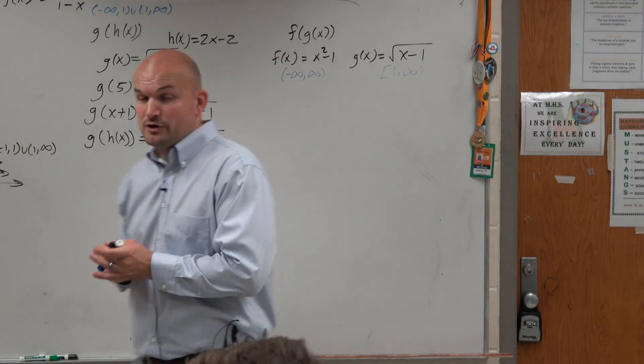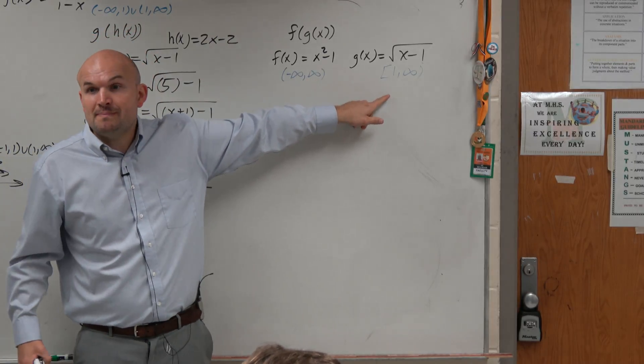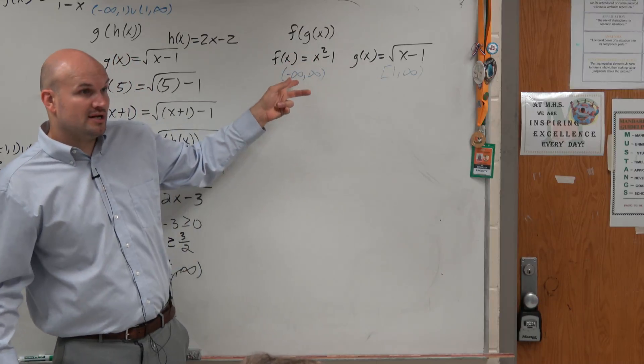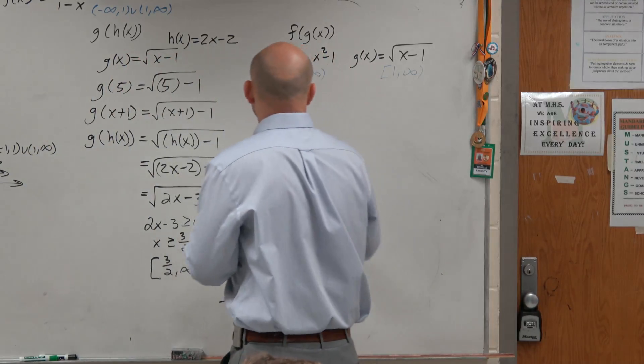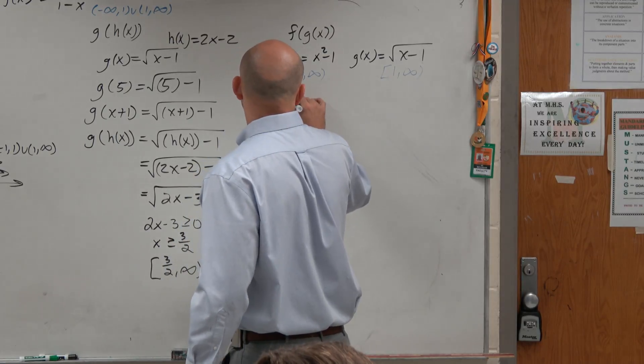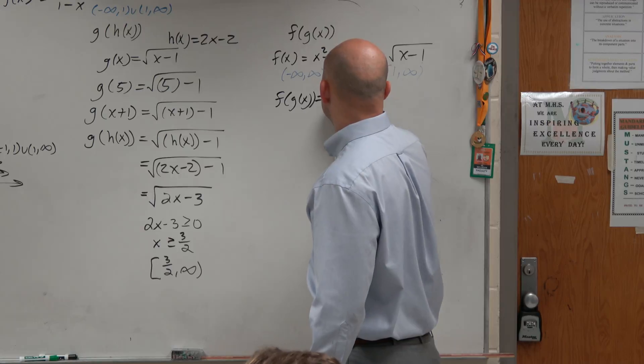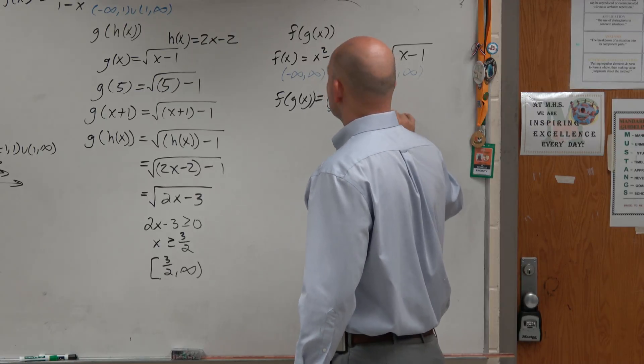So as I mentioned, if you're plugging a function into another function, you have to remember that domain restriction. Not for the one you're plugging into, but the one you're plugging in. So when I do f of g of x, that's basically saying taking g of x, squaring it, and then subtracting 1.